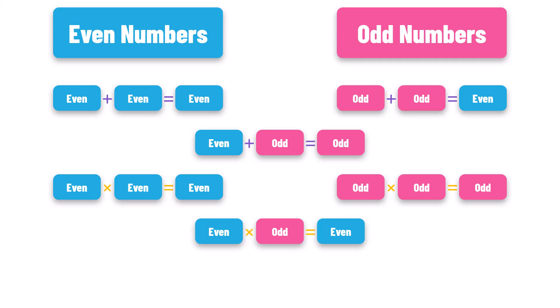Even and odd numbers are used in many areas of mathematics, including algebra, number theory, and combinatorics. They also have practical applications in computer science and engineering, where even and odd numbers are used to optimize algorithms and hardware designs. That's everything you have to know about even and odd numbers.